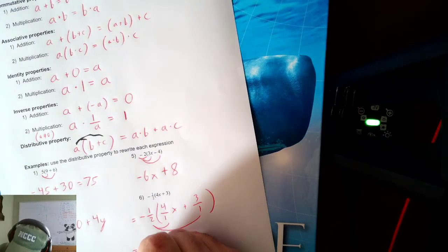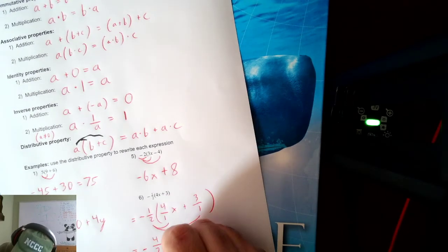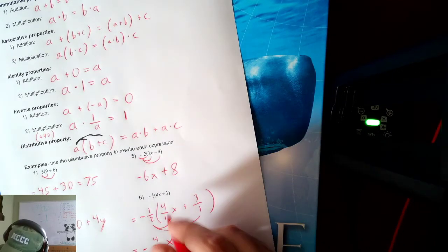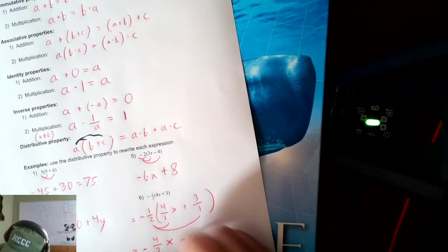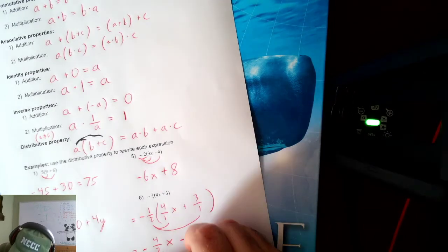Negative times a positive is a negative. 1 times 4 is 4. 2 times 1 is 2 in the bottom. Don't forget the X. Now, negative and a positive make a negative. 1 and 3 make 3. 2 and 1 make 2.